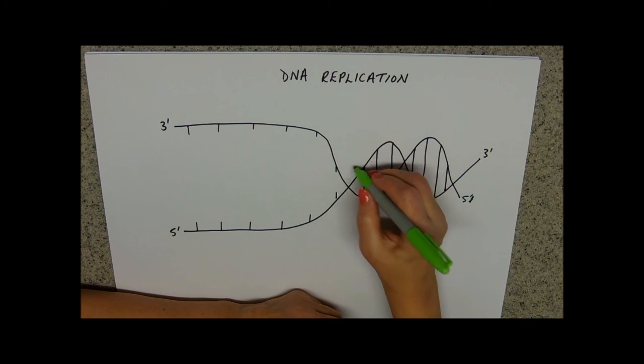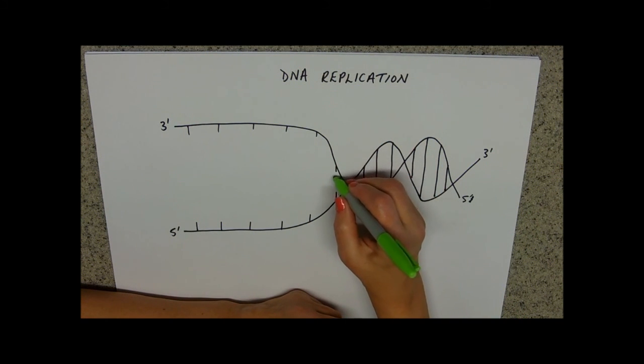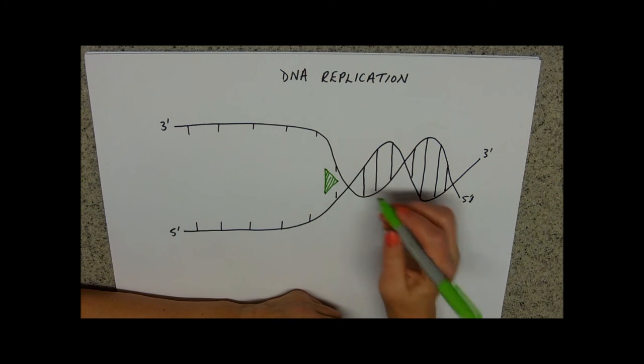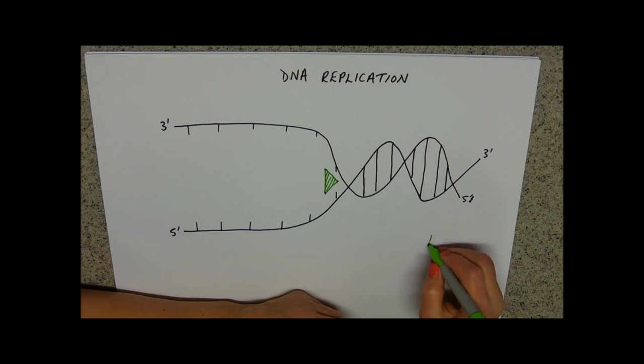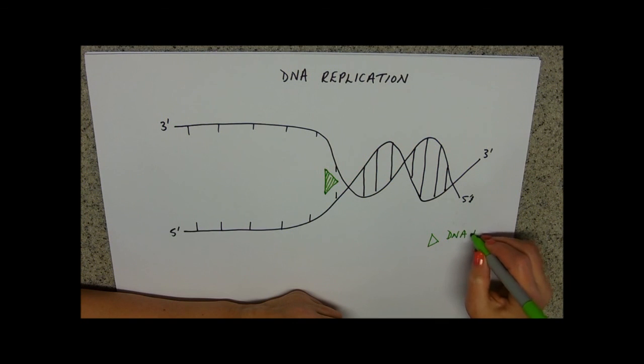Our first enzyme is the one that works kind of here. I'm going to draw it as a triangle. And this enzyme is called DNA helicase. It's the one that unzips your genes.